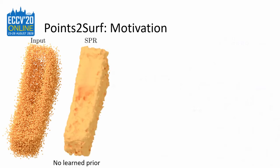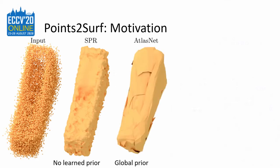The gold standard, Screened Poisson surface reconstruction, fits a signed distance field to a given point cloud. It has no learned prior, which makes it very general but limits its robustness and accuracy. One recent data-driven method is AtlasNet, which aligns the vertices of subdivided planes to a point cloud. Another one is DeepSDF, which learns an SDF from a point cloud. Both have a global shape prior which doesn't generalize well.